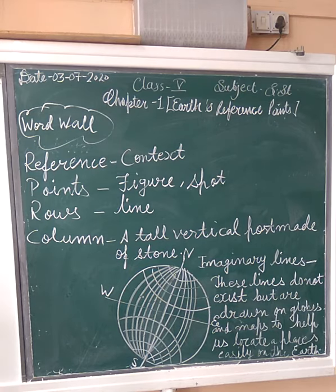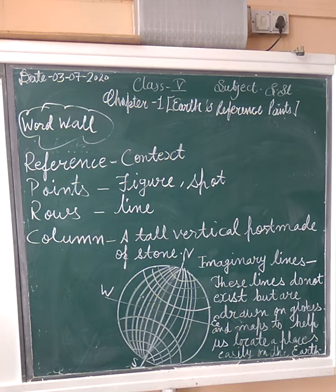There is a very important course. First is Daptic — it means content. Second, it means figure and spot. The rows means line, column and tall — vertical toes made of stone.